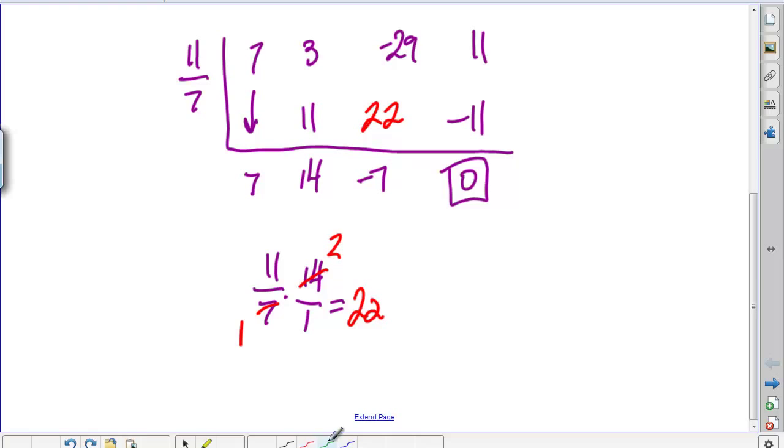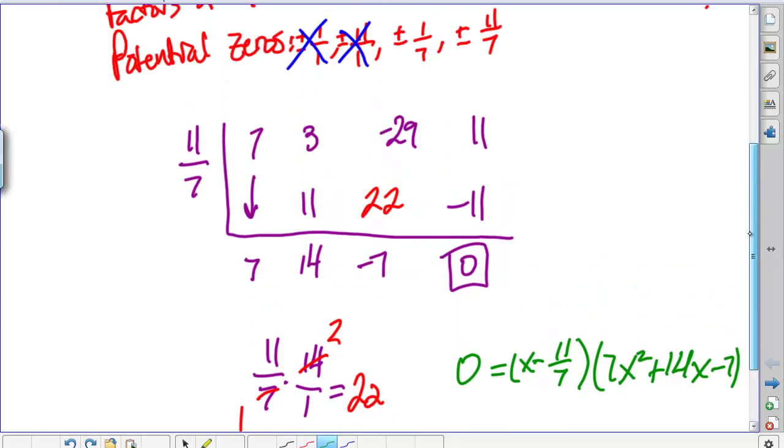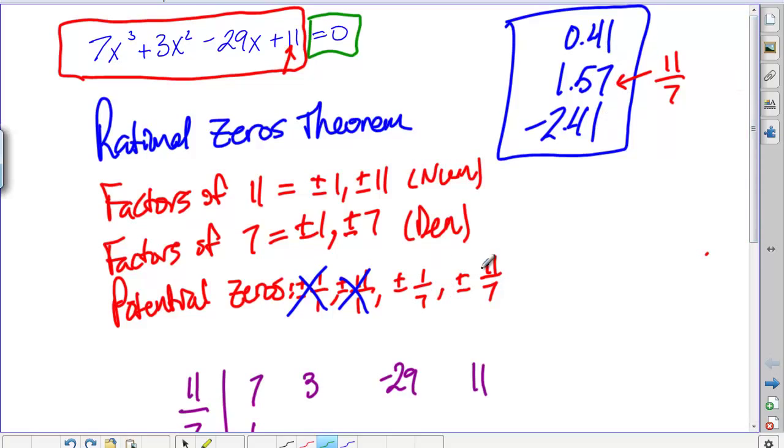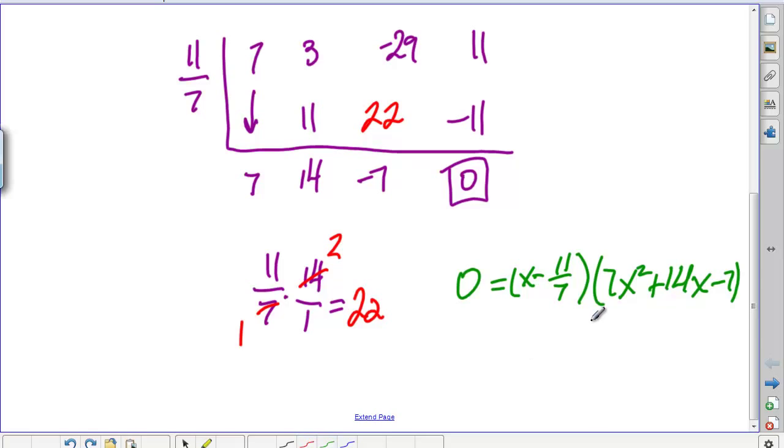And now we can say zero equals x minus 11 over 7 times 7x squared plus 14x minus 7. We have found one solution, that's 11 over 7. Now the other two, the decimal values we came up with 0.41 and negative 2.41, those aren't on this list of potential rational zeros. So the other numbers on this list aren't going to work. Those are kind of hidden into that trinomial there.